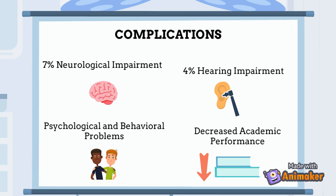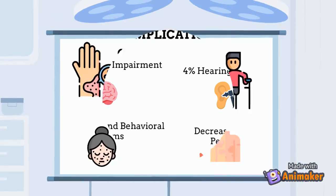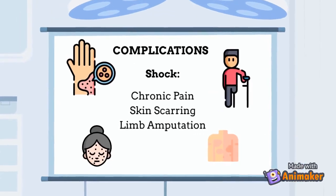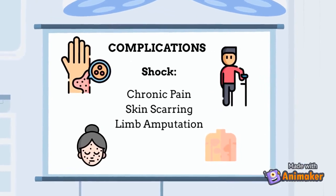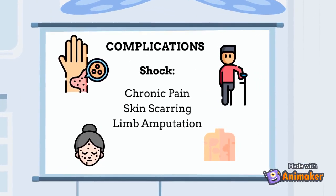If an individual develops shock as part of their disease, the most common complications include chronic pain, skin scarring predominantly to the legs, arms, chest, and face, and around a 3% rate of limb amputations.